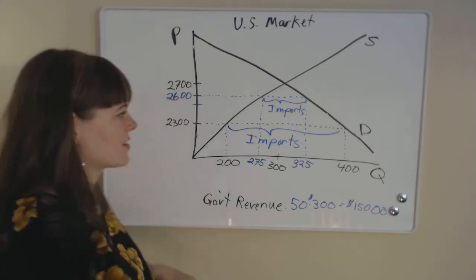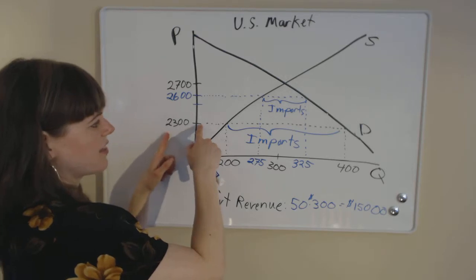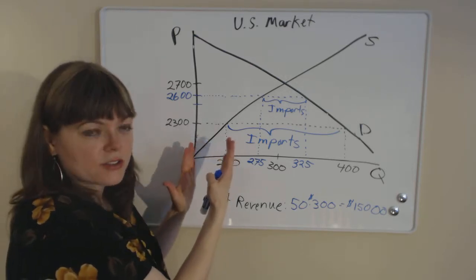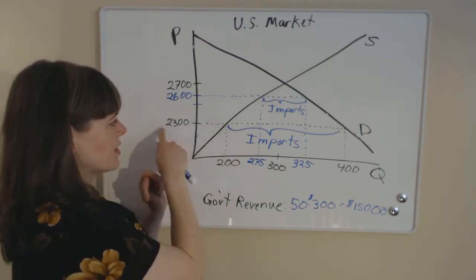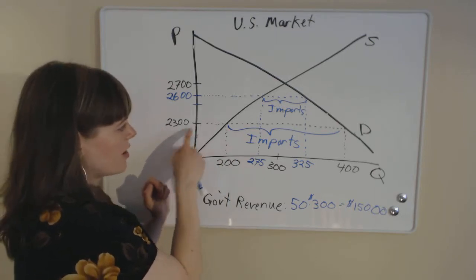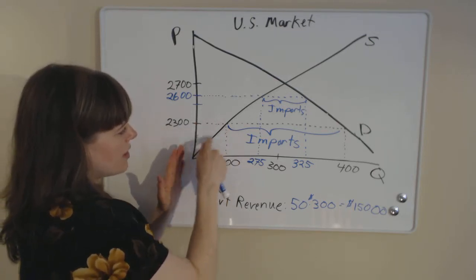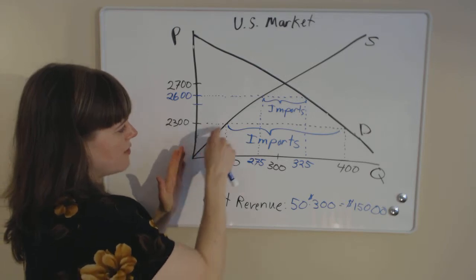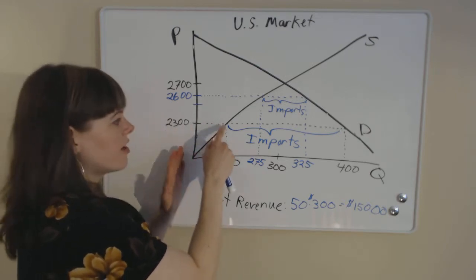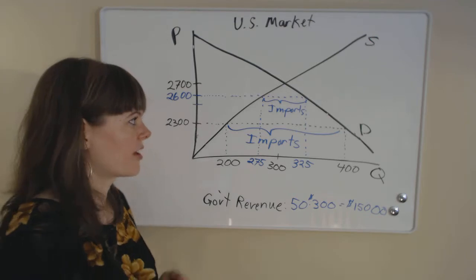Producers, on the other hand, if we look at the producer surplus in the case with free trade, only 200 of those producers were actually willing to produce at this low price of $2,300. So looking at the producer surplus, we have this tiny little triangle over here that represents producer value in a free trade market.